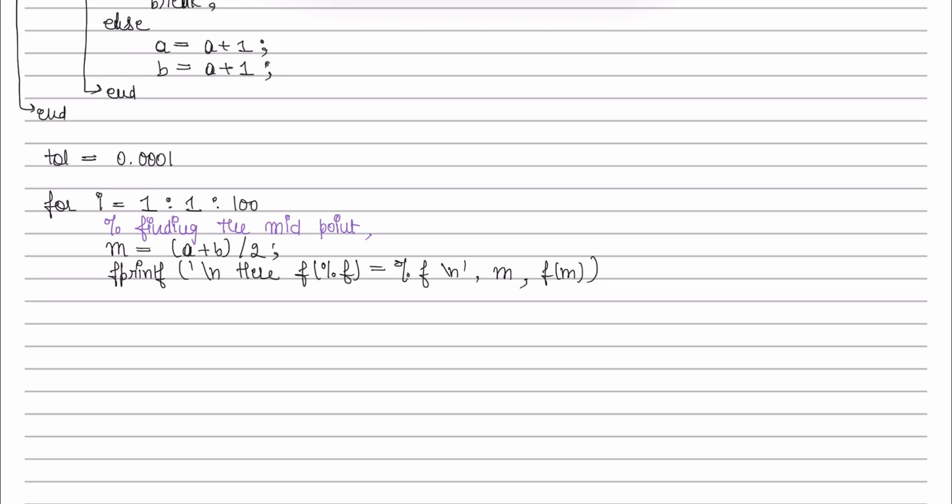Now, we have to find the sub-interval where the intermediate value property holds. If the intermediate value property will hold between a and m, then we will update the value of b as m.